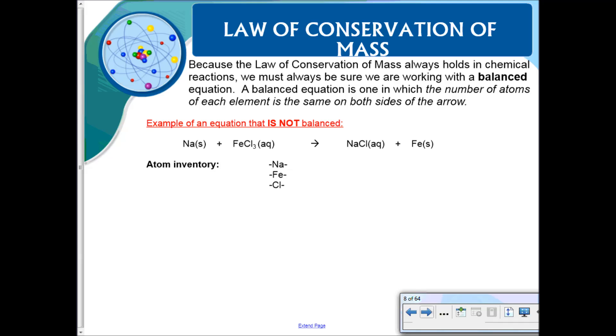Because the law of conservation of mass always holds in a chemical reaction, we must always be sure we are working with a balanced equation. So a balanced equation is one in which the number of atoms of each element are the same on both sides. So we have to balance these. What I always do is write down each element and then I count how many are on the left side. There's one sodium over here, there's one sodium there. For iron there's one here and there's one here.